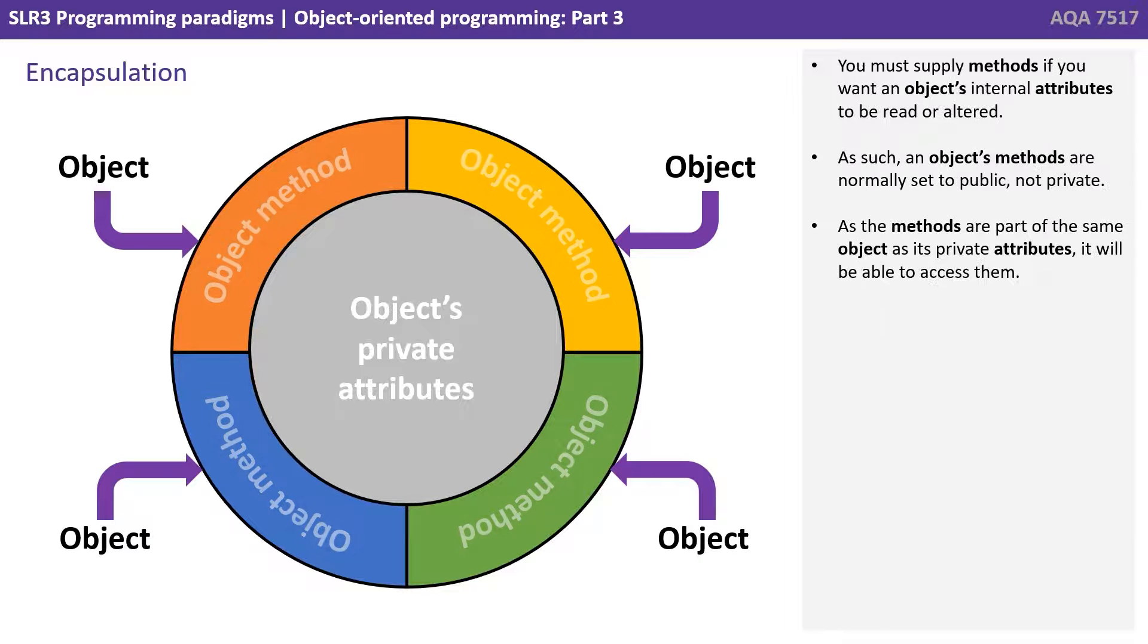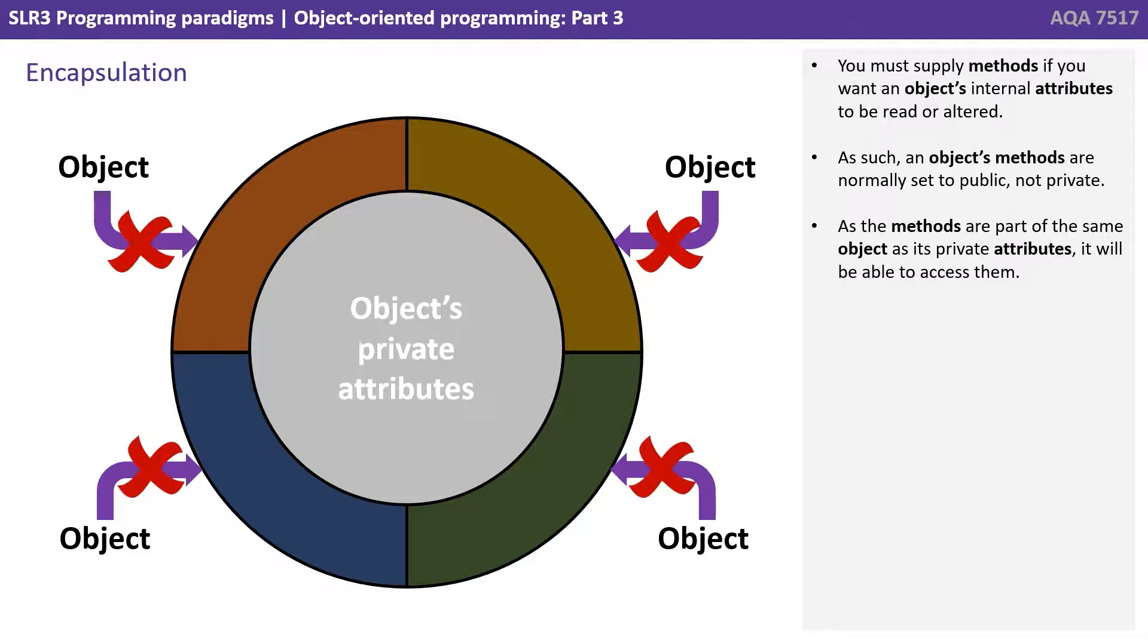You must supply methods if you want an object's internal attributes to be read or altered. As such, an object's methods are normally set to public, not private. As the methods are part of the same object as its private attributes, they will be able to access them.